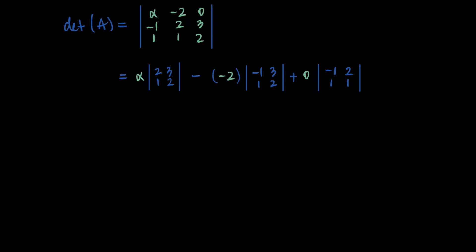And we can see here that with the zero, this final term is going to go away. So all right, let's simplify. So the first term, I'm getting alpha times 2 times 2 minus 3 times 1.